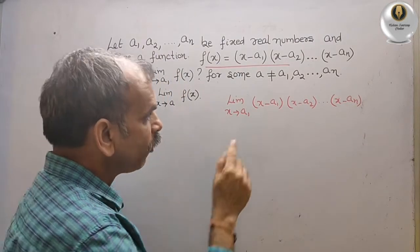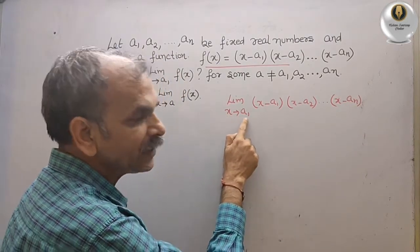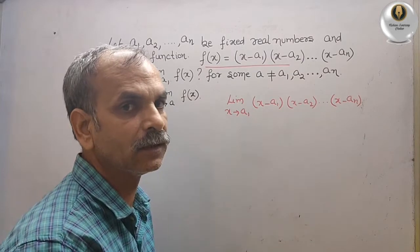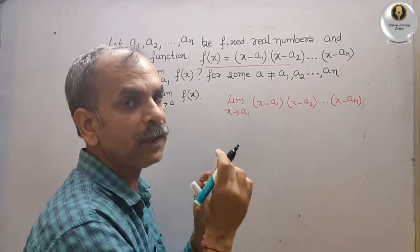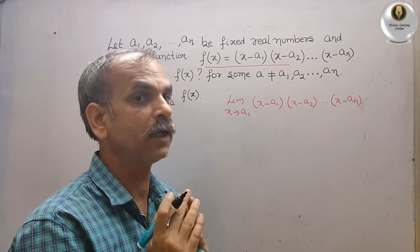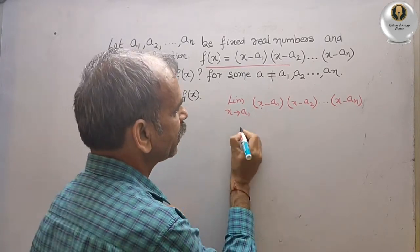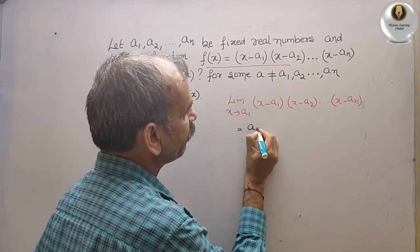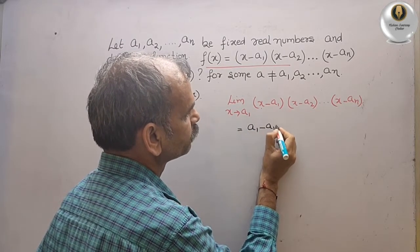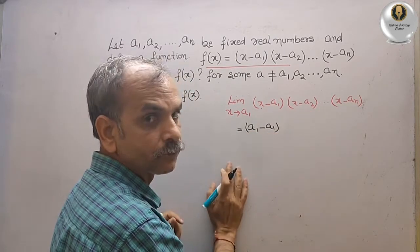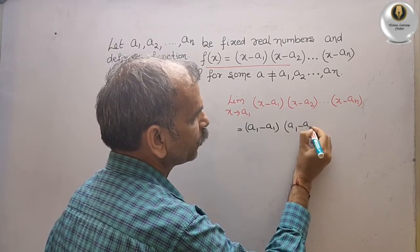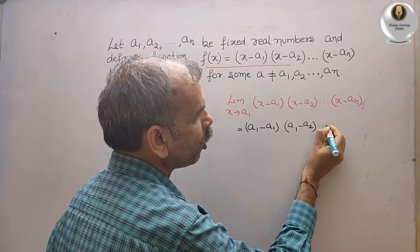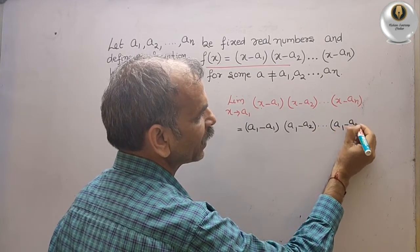Now, what they have told: x tends to a1, that means we will substitute the value in place of x. So what we will get, we will get (a1 minus a1), here (a1 minus a2), so on up to (a1 minus a9).